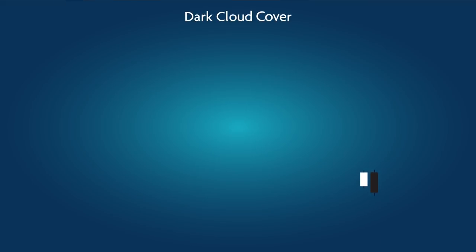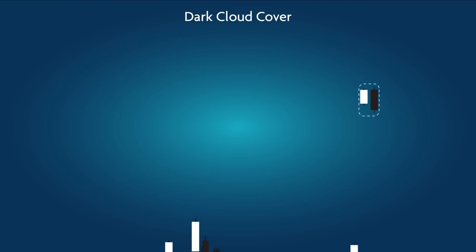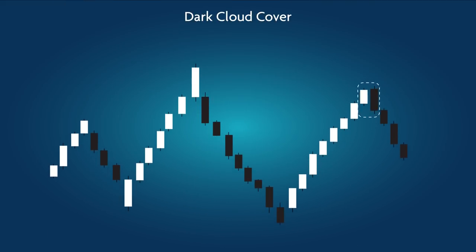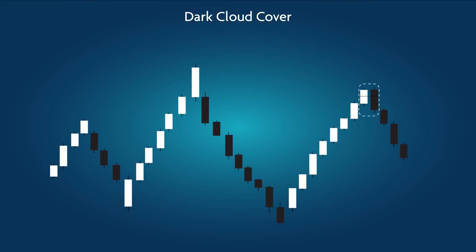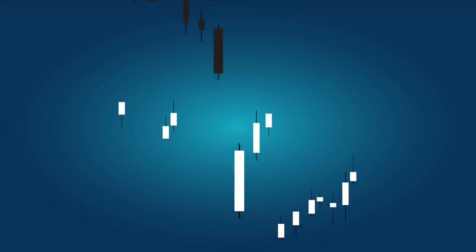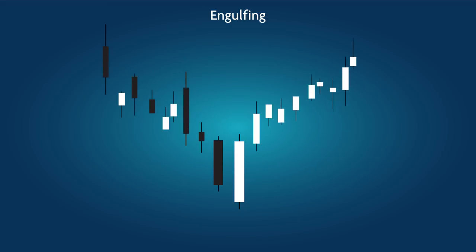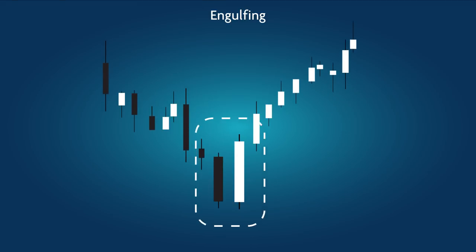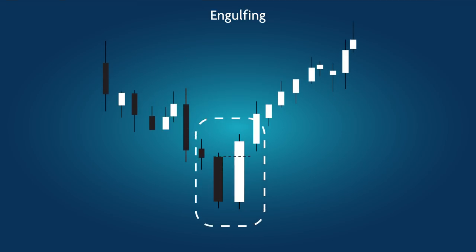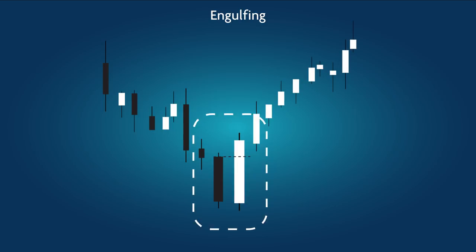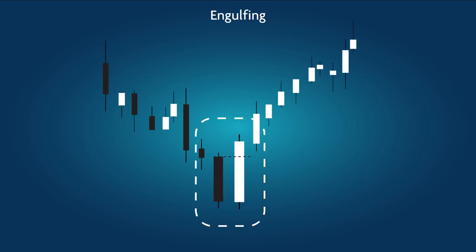Dark Cloud Cover: a bearish pattern in which the black candle covers more than half of the clear candle's movement, in the opposite direction of the stock's overall movement. Engulfing: a bullish pattern in which the clear candle covers more than the entire length of the black candle, in the opposite direction of the stock's overall trend.